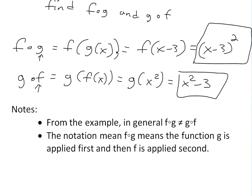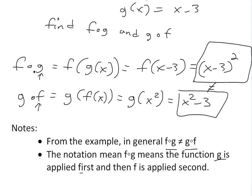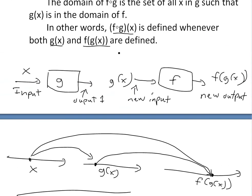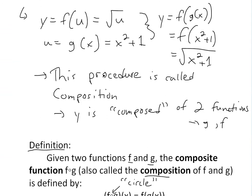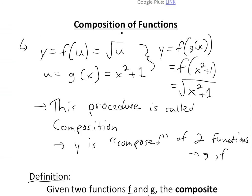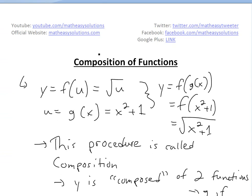From this example we learned that in general, f circle g is not equal to g circle f — as you can see, the two results are different. The notation f circle g means function g is applied first and then f is applied second. For f circle g we applied g first; for g circle f we applied f first. That's all for today — you can download these notes in the Dropbox link below, and stay tuned for another Math Easy Solution.